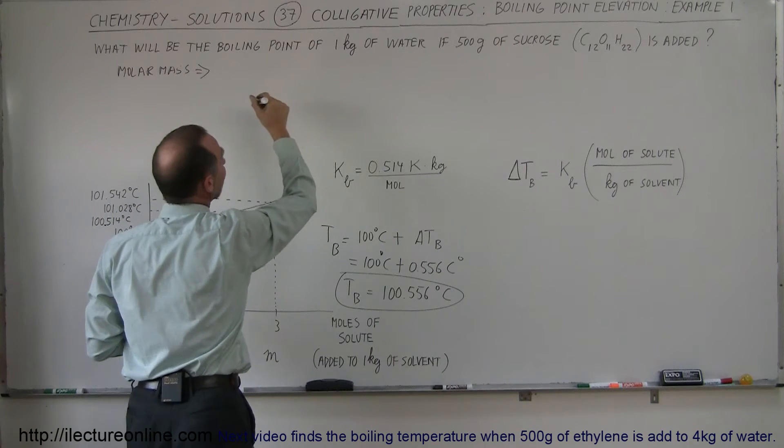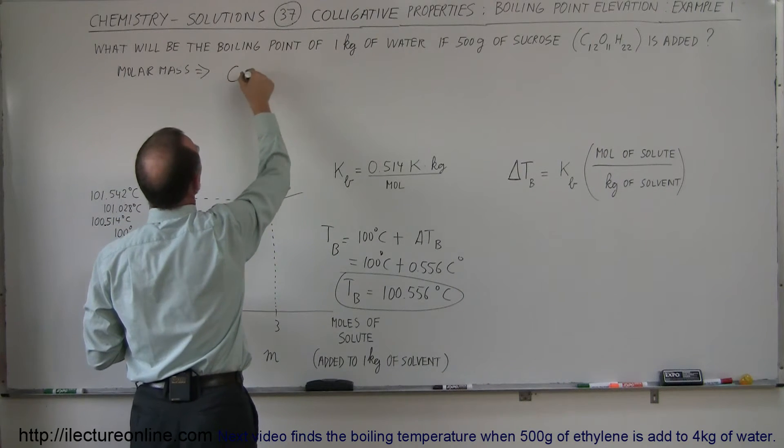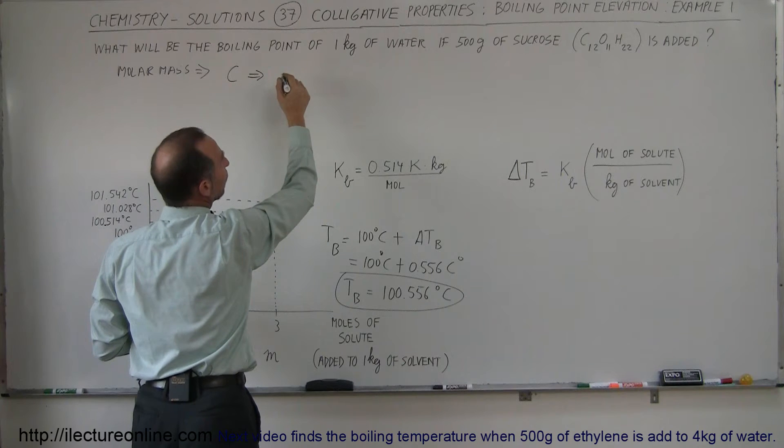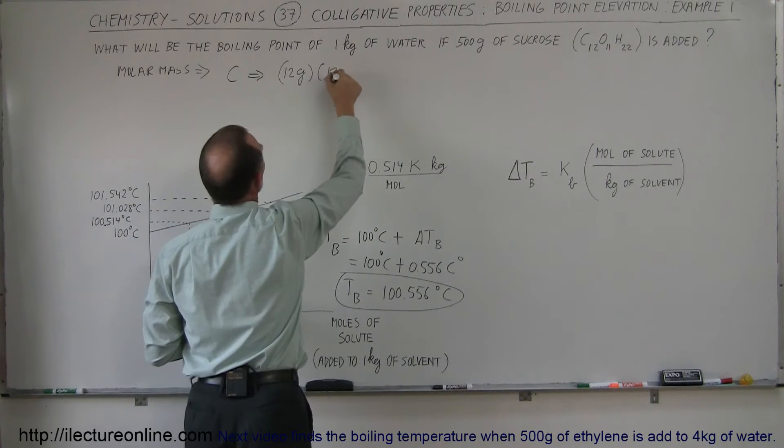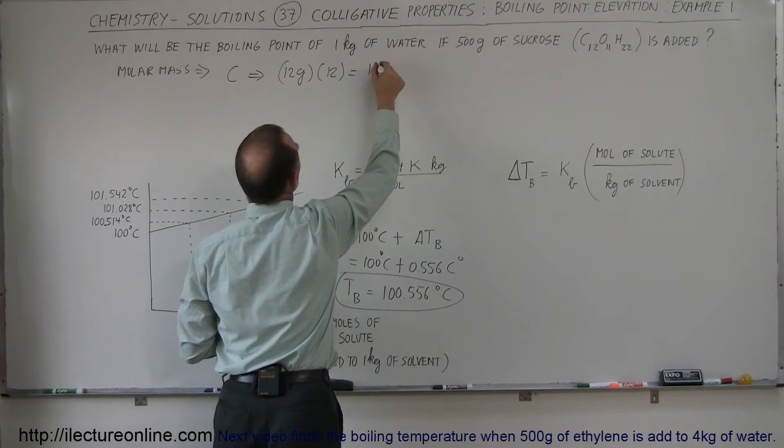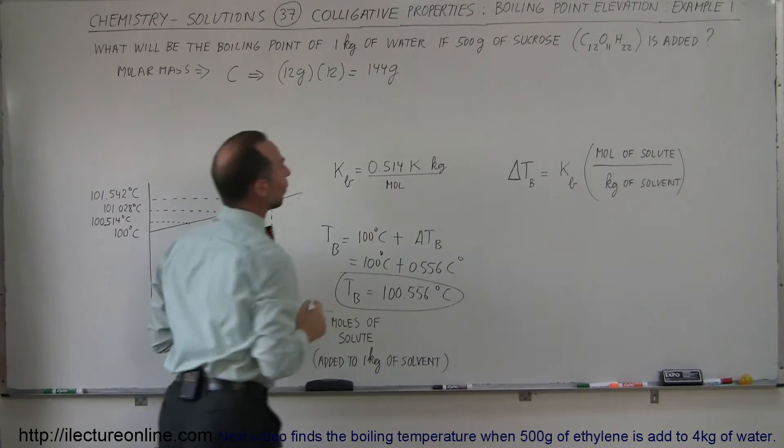Let's find out how many we have for carbon. We have 12 molecules of carbon, and they each have a mass of 12 grams. So it's 12 grams times 12, which is equal to 144 grams for the carbon.